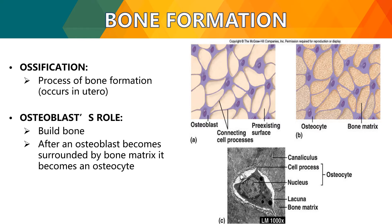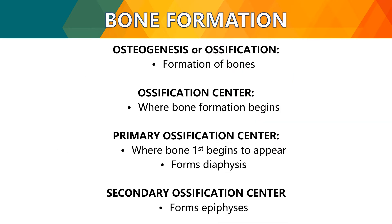For bone formation, ossification or osteogenesis is the process of bone formation. It occurs in utero, meaning even while the embryo is still developing in the womb. The osteoblast builds bone, and after an osteoblast becomes surrounded by bony matrix, it becomes an osteocyte. There are two types of ossification centers: the primary ossification center, where bone first begins to appear and forms the diaphysis, and the secondary ossification center, which forms the epiphysis.